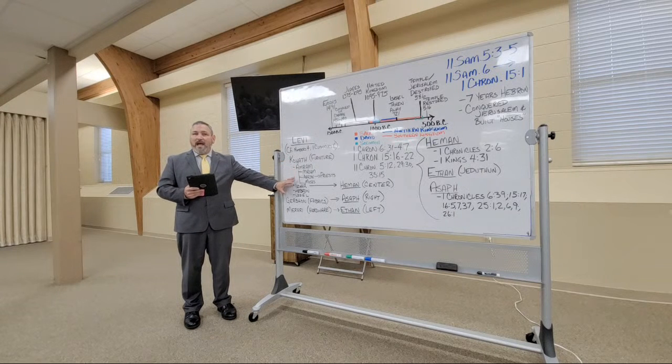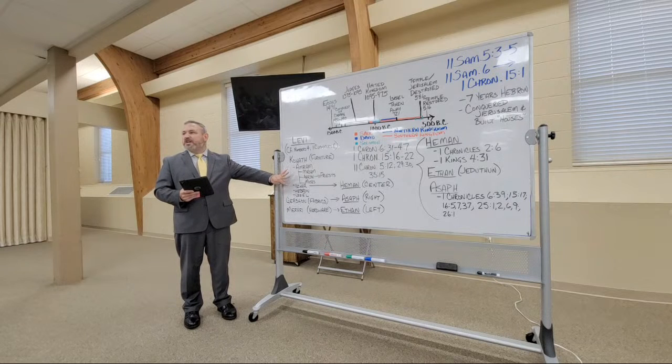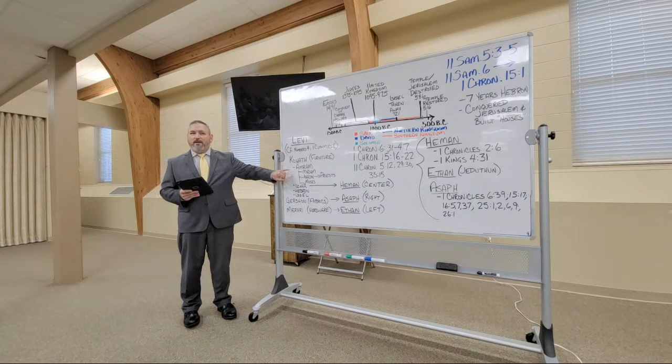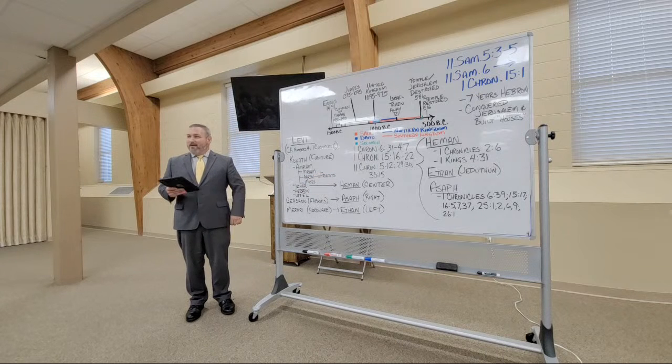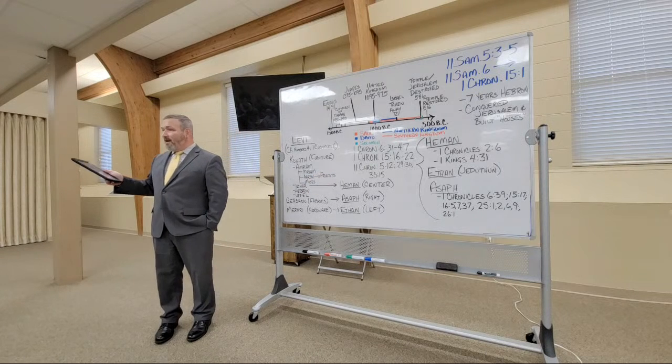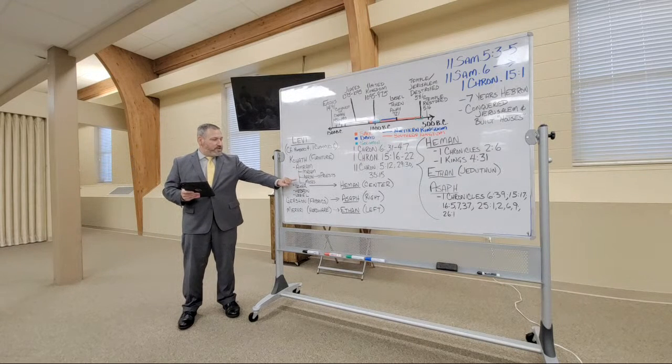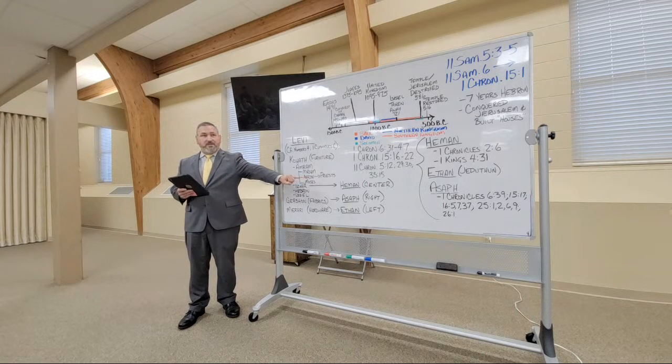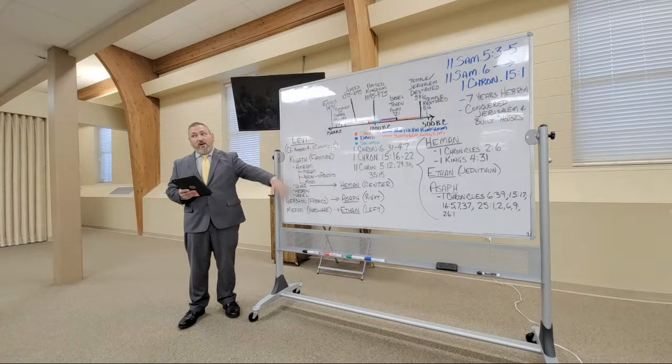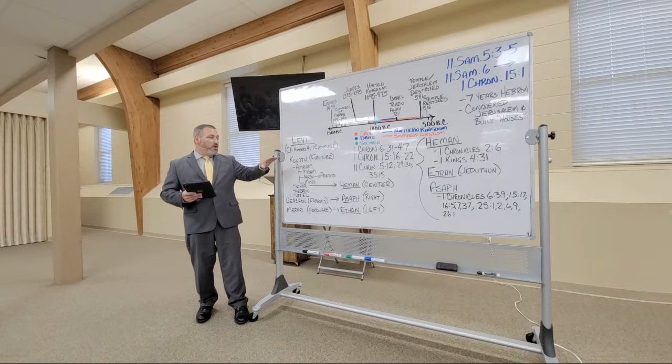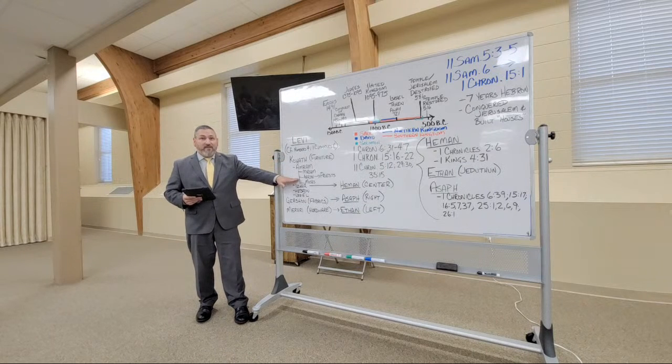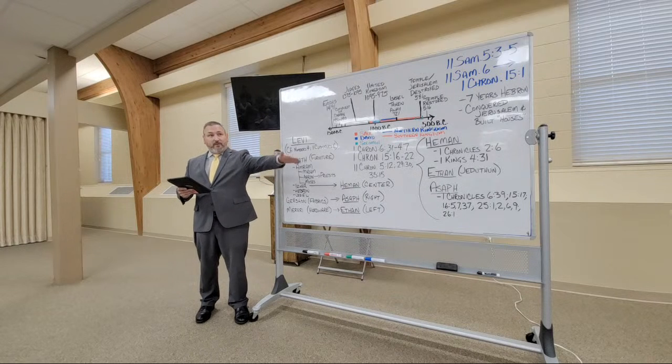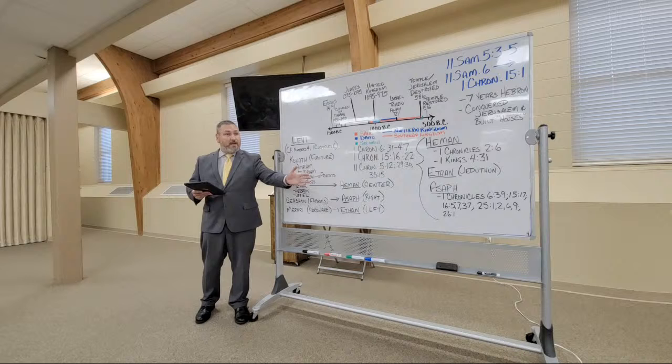When we begin to break the family of Kohath down even further, there are four sort of sub-clans or sub-families. The first of which is attributable to Amram. Anybody remember the name of Amram? Amram and Jochebed were the parents of Moses and Aaron and Miriam, right? So from his family, of course, descends Moses the lawgiver, Aaron, who is the forefather of all the priests. All priests were Levites, but not all Levites were priests, right? Only the Levites who were descended from Kohath and then within Kohath from Aaron could be priests. And of course, the high priest was the oldest living male, direct descendant of Aaron, who met all the qualifications to be a priest.